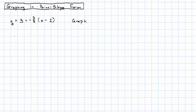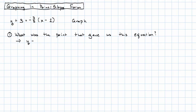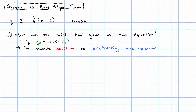First, we need to figure out what the point was. In order to do that, remember the point-slope form was y minus the given y equals the slope times x minus the given x. Our goal is to figure out the given x and the given y. But in order to do that, both of these operations need to be subtraction.